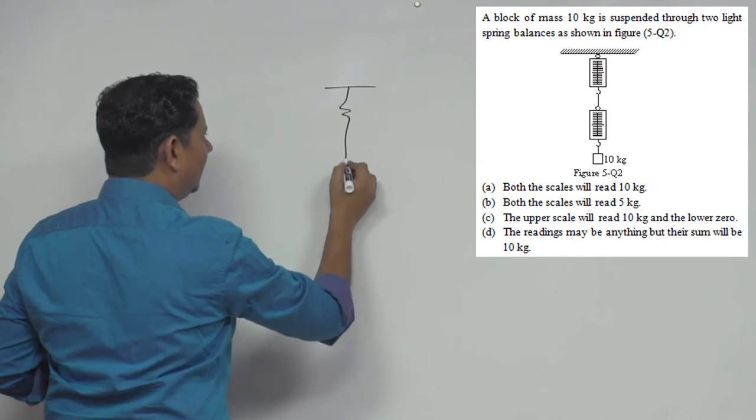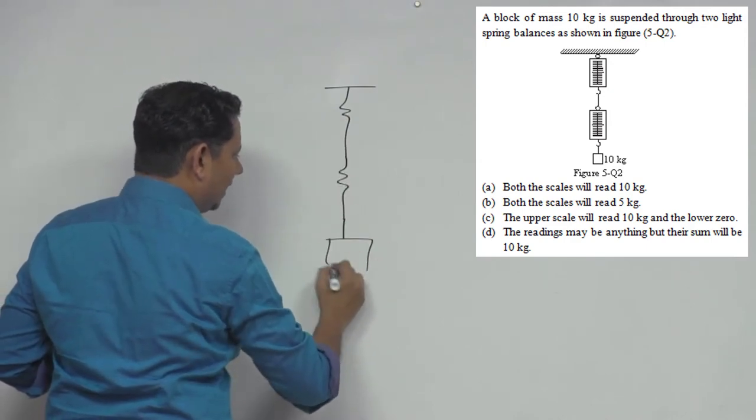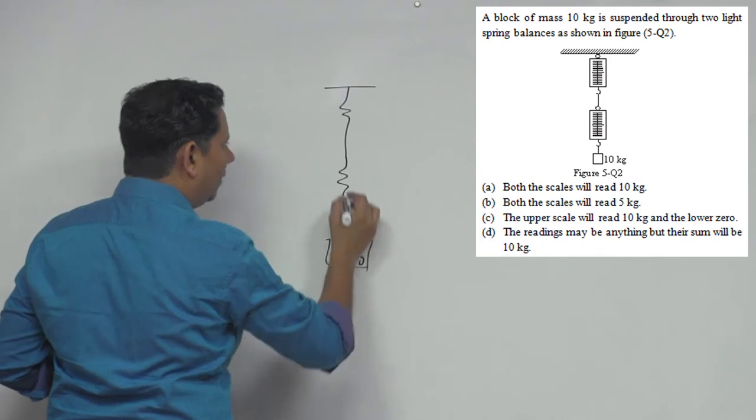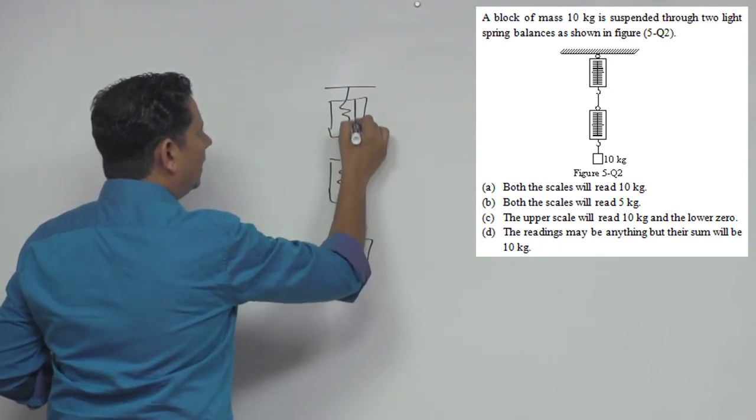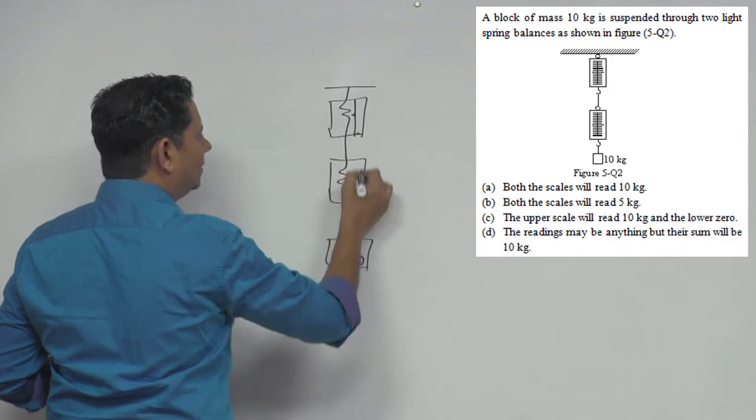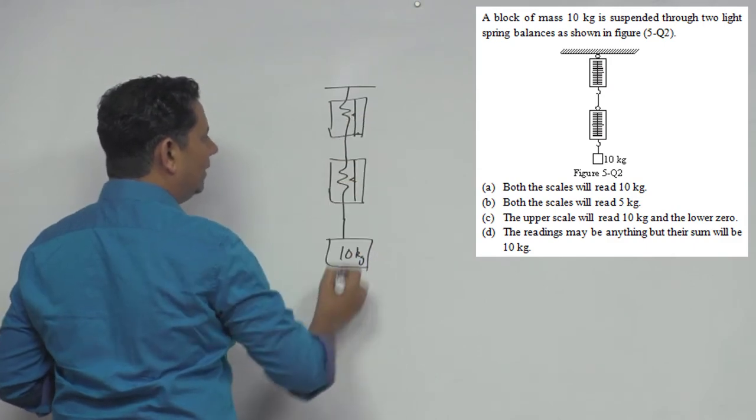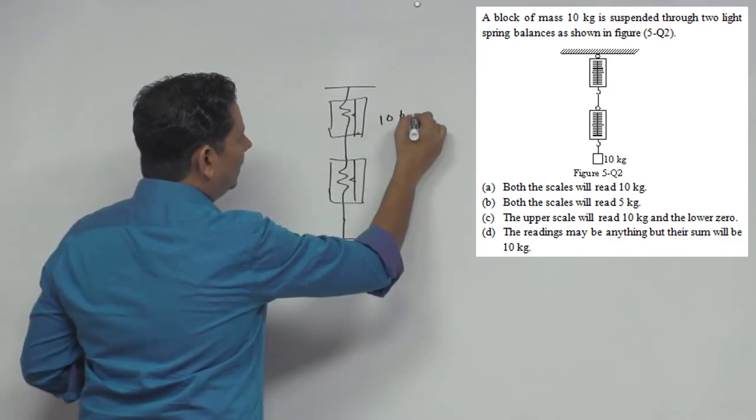So the scenario is that this is one spring balance, this is the second spring balance. Here you have suspended 10 kg, and on this spring balance, there will be a reading here. The reading that will come, both will show 10 kg.